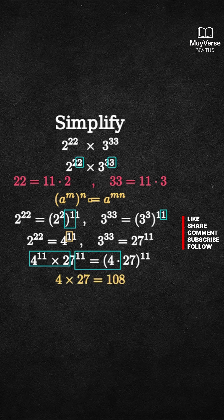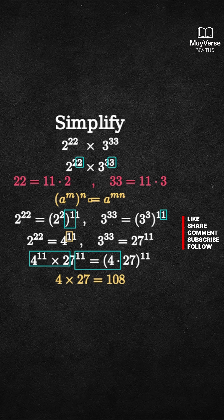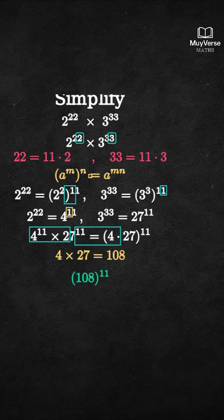This is the simplified expression. Recap in one line: 2^22 × 3^33 = 108^11.